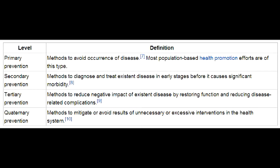What is secondary disease prevention? Secondary disease prevention is early detection of disease. An example of this would be to get a pap smear.